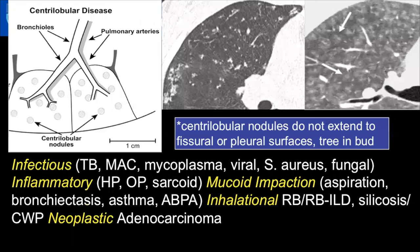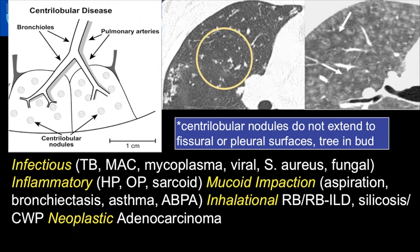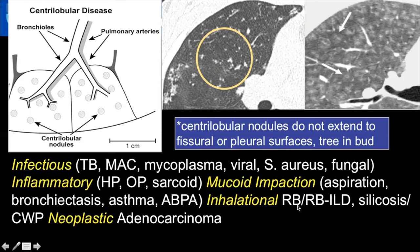The centrilobular pattern is also an important distribution to recognize. It may be associated with tree-in-bud nodularity, which is important to recognize because it takes you down a bronchiolar process pathway — usually infectious and inflammatory causes. Centrilobular nodules can also demonstrate ill-defined haziness without tree-in-bud nodularity, which is often a feature seen in hypersensitivity pneumonitis in the acute or subacute phase, and in inhalational smoking-related interstitial lung diseases such as respiratory bronchiolitis-ILD. Typically, centrilobular nodules spare the visceral pleural surface, a few millimeters away, and are evenly distributed when diffuse.